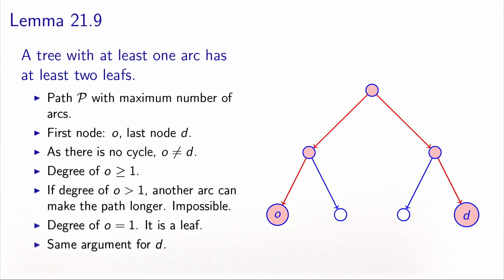Then you can use the exact same argument for node D, which will also be a leaf — it is of degree one.